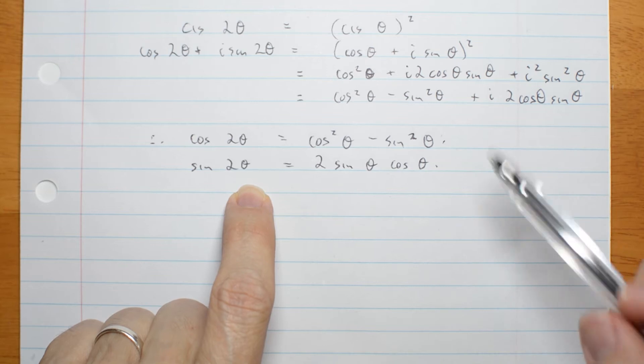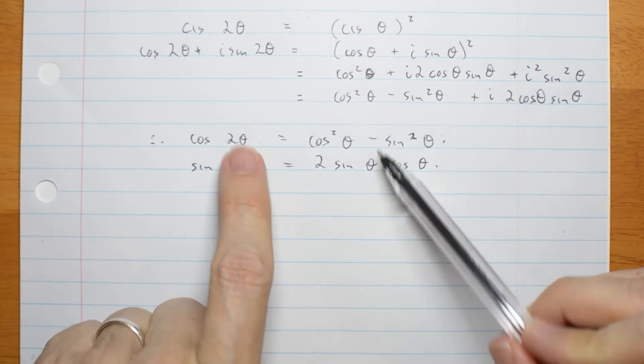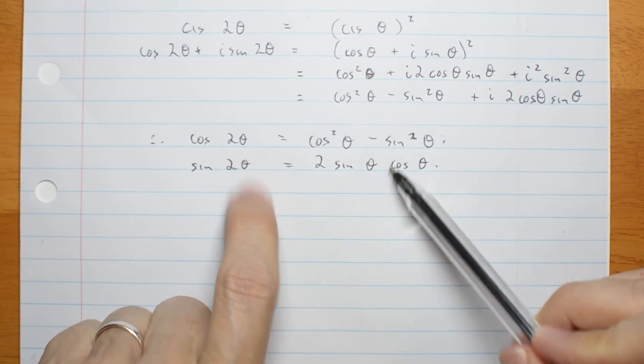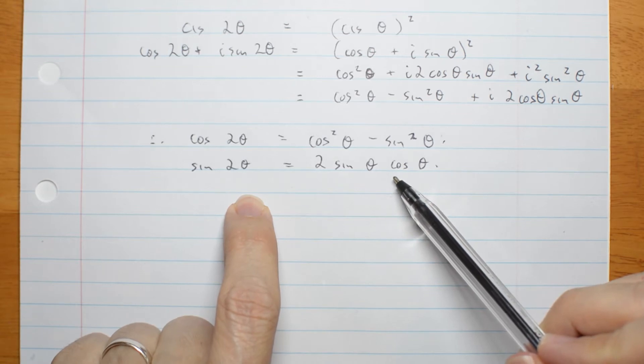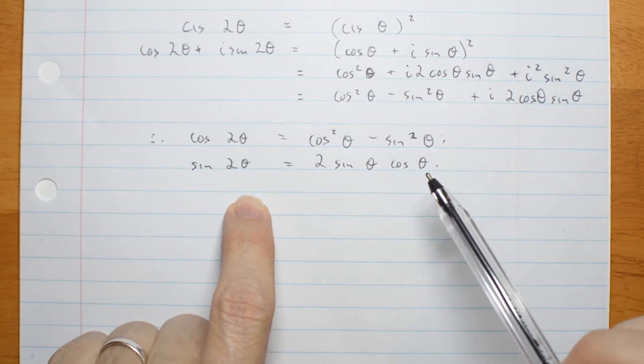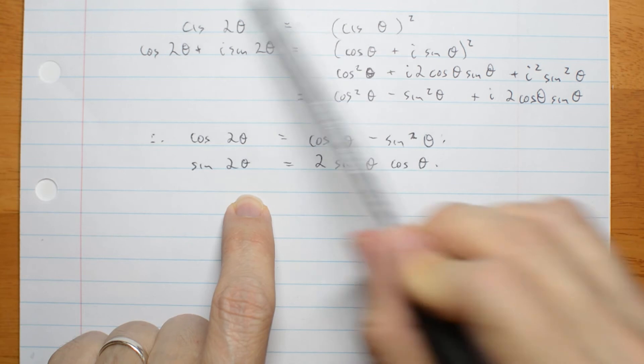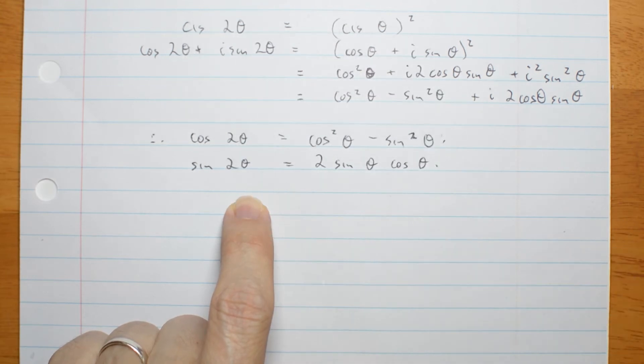Year 12s, do you remember how hard it was to prove these two identities last year? So, this method gives you access to many of these kinds of trigonometric identities.